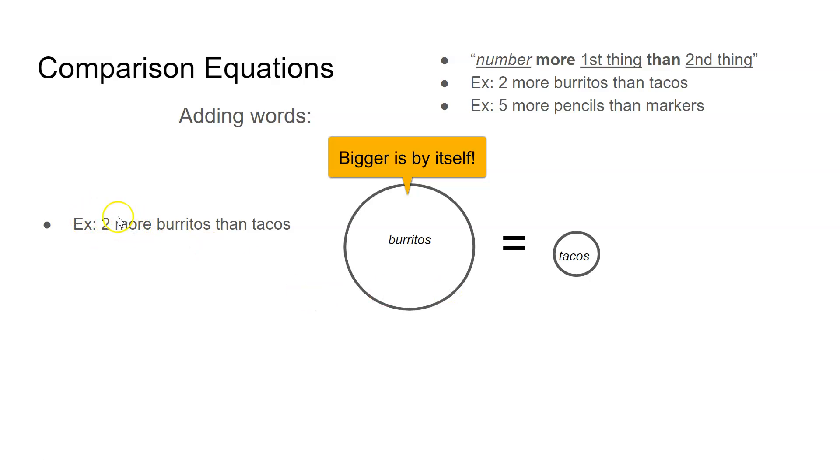They tell me that there are two more burritos. So I would need to add two to the tacos to make them equal with the burritos. When I write that as an equation, B for burritos equals tacos plus two. That is the equation that matches the words two more burritos than tacos.